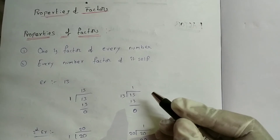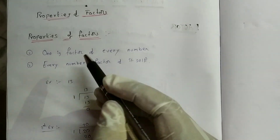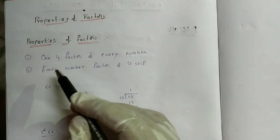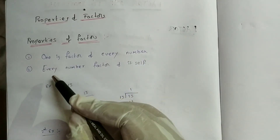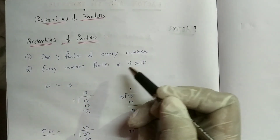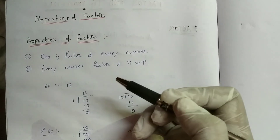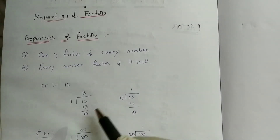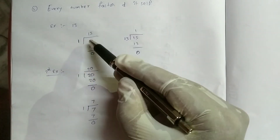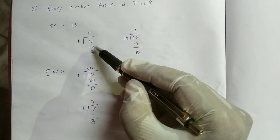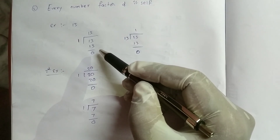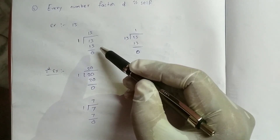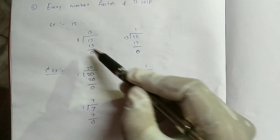Next, I am going to say the properties of factors. Property 1: 1 is a factor of every number. Property 2: every number is a factor of itself. I am going to show you this example. When we divide 13 by 1, the remainder is 0, confirming that 1 is a factor of every number.